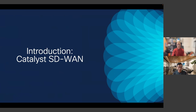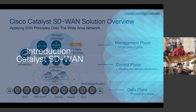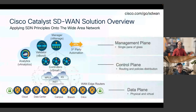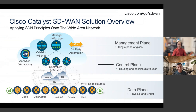We'll start with a brief introduction to what Catalyst SD-WAN is. Cisco Catalyst SD-WAN is a solution that applies software-defined networking principles to the wide area network. One of the biggest benefits is that it separates the management plane, the control plane, and the data plane, and provides a single pane of glass to manage and monitor the SD-WAN solution. For more information, visit cisco.com/go/sdwan.